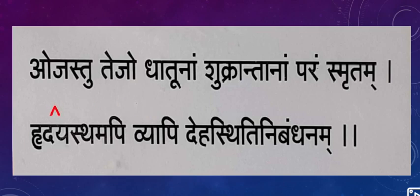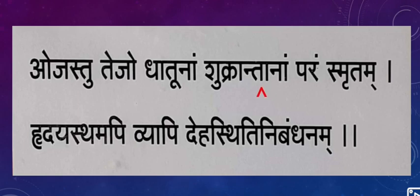Ojas jo hota hai, yeh sabhi dhatu ka essence hota hai - yeh sabhi dhatu ka sara bhag hota hai, according to Vaagbhatta. That is the meaning of 'shukrantanam param smitham' - yeh Shukra dhatu ke baad banta hai, Ojas.